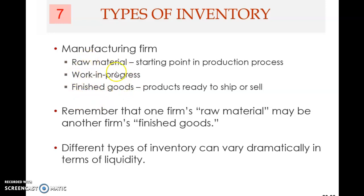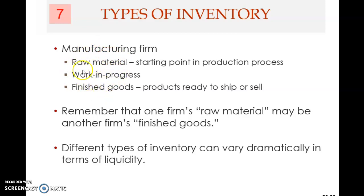The third category is work in progress, which covers all other types of inventory — not raw material and not finished goods. It's like a catch-all category. Work in progress can have various stages; it can be divided further into different stages. For example, if production has gone through the first stage, that will be first-stage work in progress, then second stage, third stage, and so on, until it becomes finished goods.